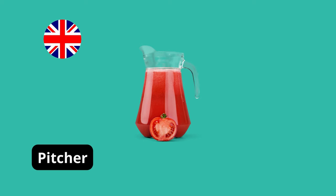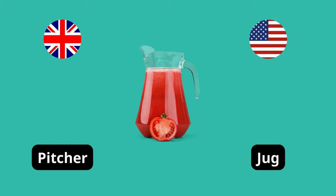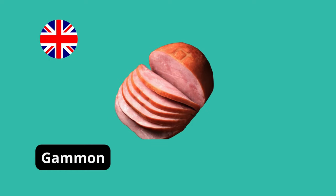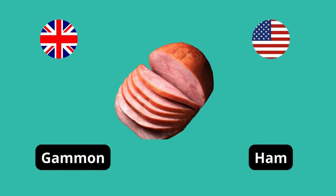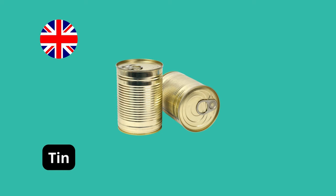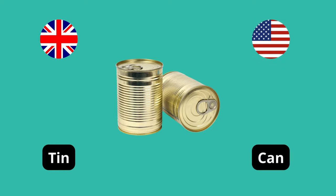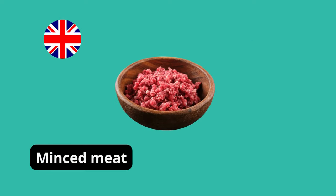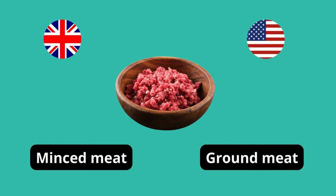Pitcher (British English) — Jug (American English). Gammon (British English) — Ham (American English). Tin (British English) — Can (American English). Minced meat (British English) — Ground meat (American English).